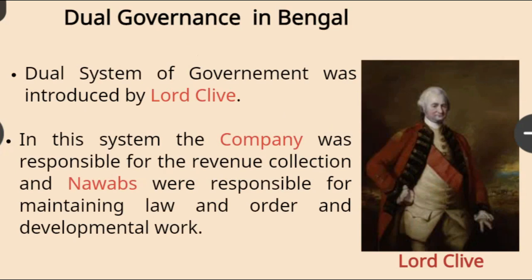So let's see what these policies were. Dual Governance in Bengal: The dual system of government was introduced by Lord Clive. In this system, the company was responsible for revenue collection and Nawabs were responsible for maintaining law and order and developmental work. The company had rights and authority but no liabilities, whereas the Nawabs had only liabilities but no authority.